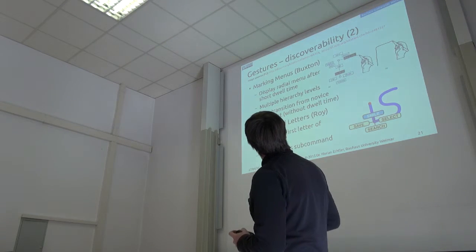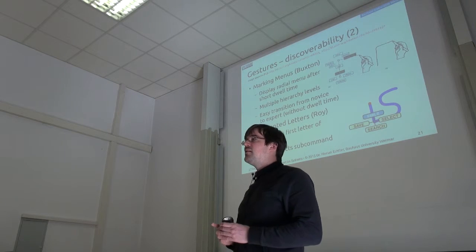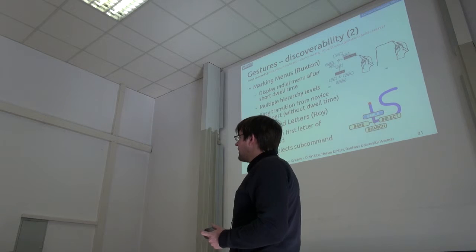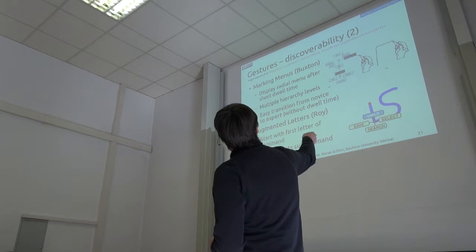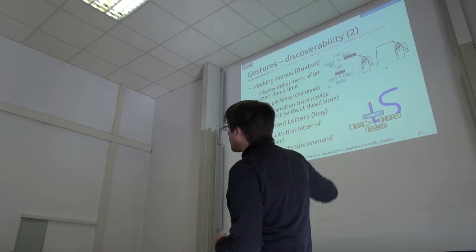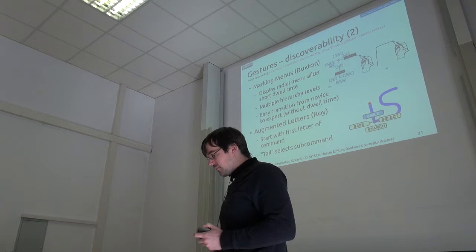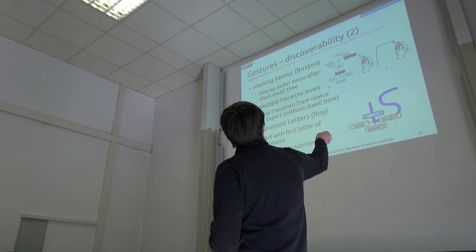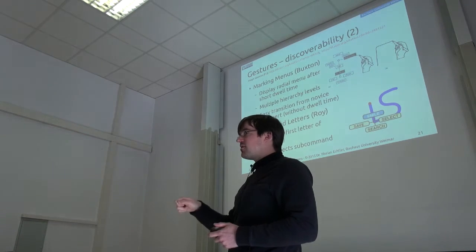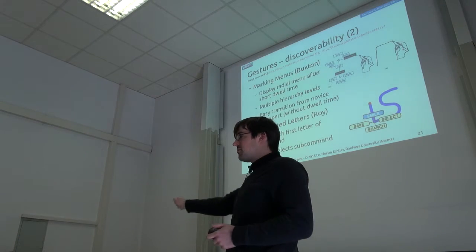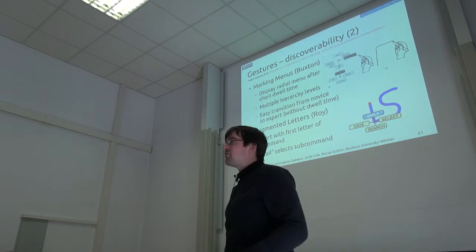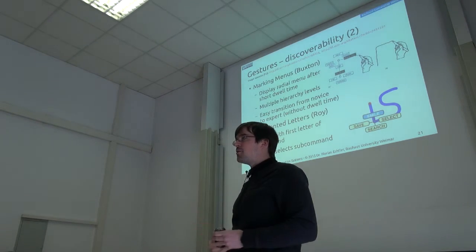This is also related to marking menus, a really old work by Bill Buxton, who's quite famous in this research area. Marking menus basically work like this: you start with menus on several levels, you open the menu, then you make a stroke through one of the menu items, pause again, and the next menu opens. Then you make a second stroke for the second selection. The idea is that if you've done this often enough, you don't even have to wait for the menu to open — you can just make the stroke and get the same selection.